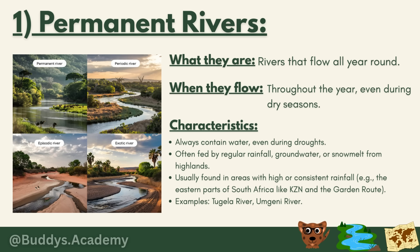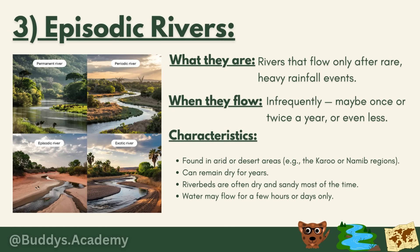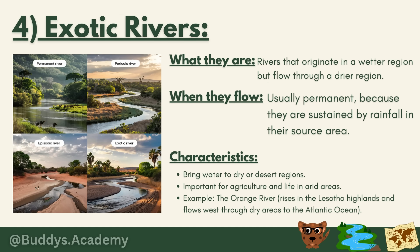So there are four different rivers that you need to know. The first being a permanent river, the second being a periodic river, the third being an episodic river, and the fourth being an exotic river.